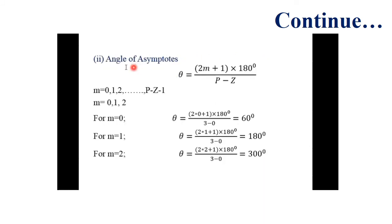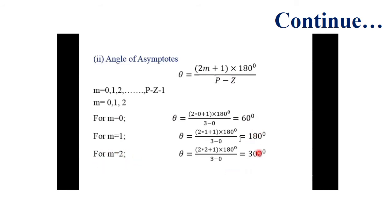For the angle of asymptotes, the formula uses m = 0, 1, 2, ..., up to P minus Z minus 1. With 3 poles and 0 zeros, P minus Z minus 1 equals 2, so m goes from 0 to 2. For m=0, θ = 60°; for m=1, θ = 180°; for m=2, θ = 300°.